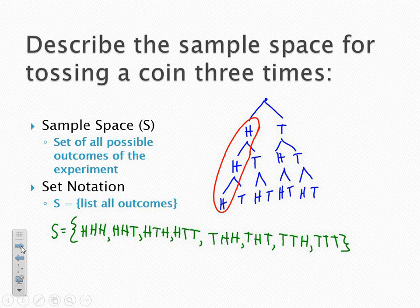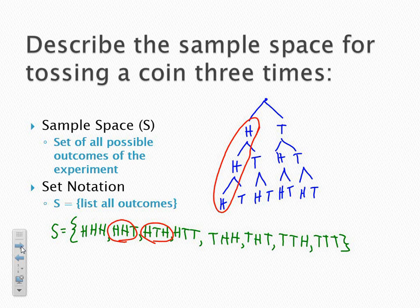So that would be our sample space — we've got eight different outcomes. If we asked what was the probability that you flipped exactly two heads, we can go through and identify all outcomes with two heads: HHT, HTH, and THH. So we'd have three out of eight outcomes that result in two heads. That's describing a sample space — pretty simple.